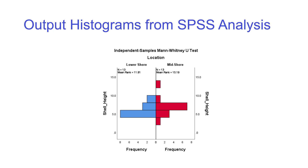The output also provides histograms showing the spread of data at the lower shore and the mid shore. Unsurprisingly, the two histograms overlap clearly with each other, confirming there is no significant difference between the shell heights at the lower shore and the mid shore.